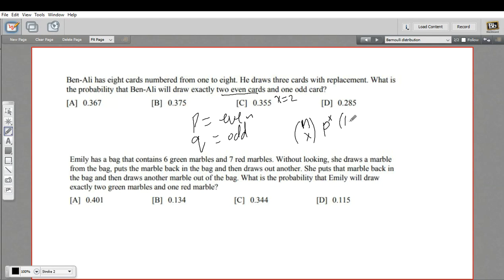Then we multiply by 1 minus p, which is the failure probability q, to the n minus x power. n is the number of trials total—here that's 3. So n minus x is 3 minus 2, which is 1. The only other number we need is p, the probability of pulling an even card. We have 8 cards and half are even, so p is 0.5.